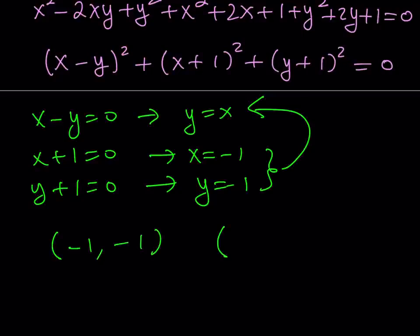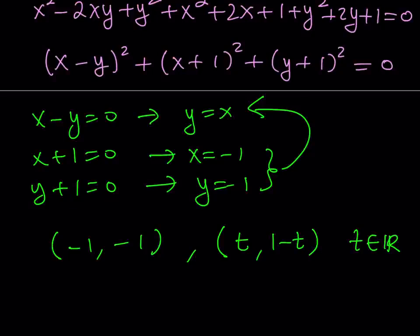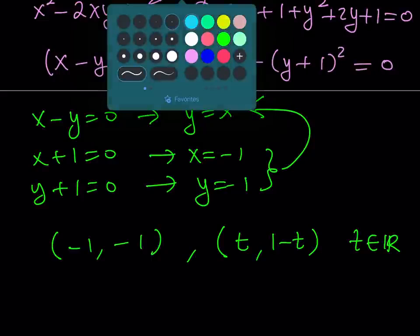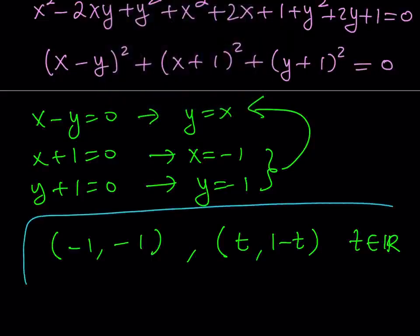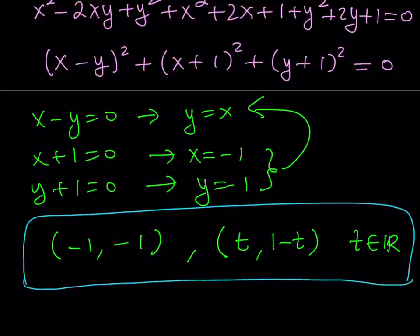So we got two types of solutions: a particular one, (negative 1, negative 1), and a more generic one where you can use all values of t — the set (t, 1 minus t) for any real t. This brings us to the end of this video. Thank you for watching. I hope you enjoyed it. Please let me know, don't forget to comment, like and subscribe. I'll see you tomorrow with another great video.